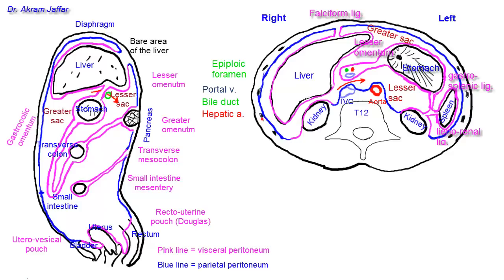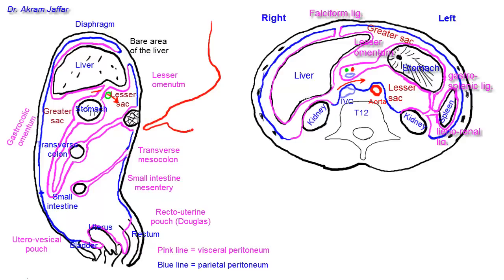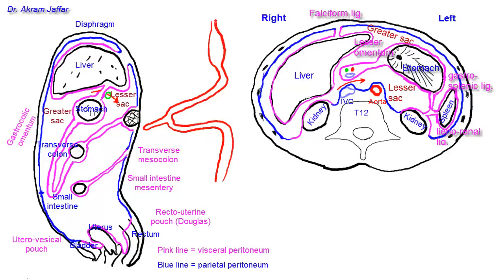Now let me give you an idea about how the lesser sac is formed — we have to go back to embryology. I'll draw the gut tube. The gut starts as a single tube with some dilatations and folding. This is the gut tube, with a distension that is going to form the stomach, and it is divided into foregut, midgut, and hindgut.